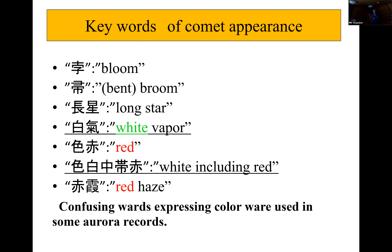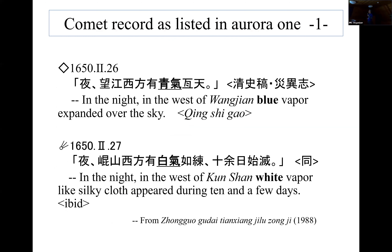The first record example is from 1650, February 26th. The record says: 'In the night, in the west of Wanzian, blue vapor landed over the sky.' This is only a two-line expression. Wanzian is a location in China — nowadays Jinxi — and the recorded color is blue.